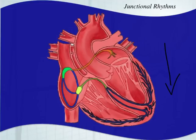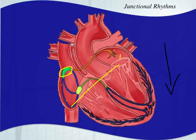We've covered the SA node and we've covered everywhere else in the atria that can create the depolarization, create a pacemaker. Now I want to talk about the AV junction. AV stands for atrial ventricular. Using some intuition, you can figure out that the AV junction is between the atria and the ventricles.